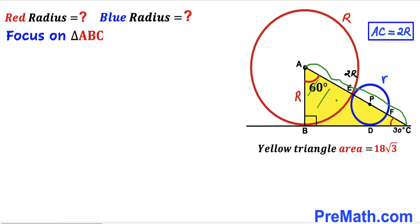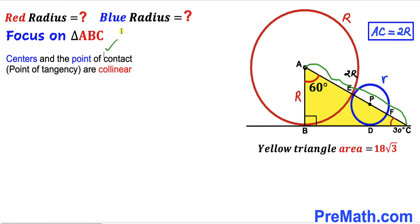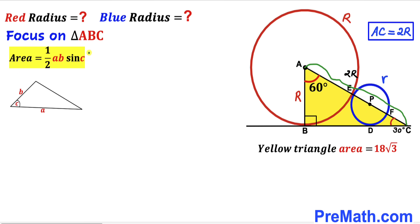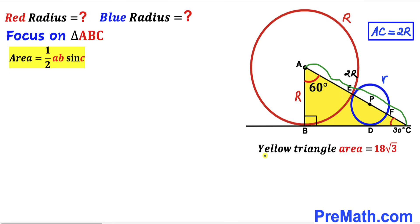Bear in mind that the centers and the point of tangency are collinear, so points A, E, and center P are collinear. Now let's recall the area of a triangle formula: Area = ½ · a · b · sin(C), where a and b are side lengths and C is the included angle. For triangle ABC, one side is uppercase R, the other side is 2R, and the included angle is 60 degrees. The area has been given as 18√3 square units.